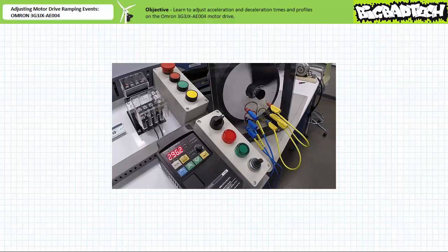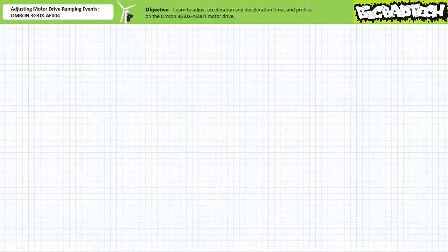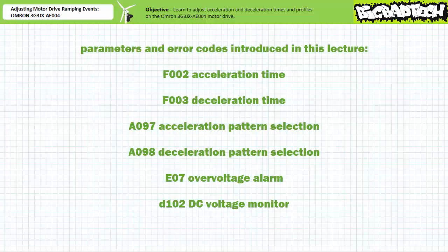Notably, the heavy flywheel decelerates to a speed I can stop with my finger in only 13 seconds, whereas previously I had enough established inertia to rotate for just shy of 6 minutes. 6 minutes of waiting just got reduced to 13 seconds. In conclusion, we learned to change acceleration and deceleration times and profiles on the Omron 3G3JX AE004 motor drive and observe their results. Additionally, we learned to recover the Omron 3G3JX AE004 motor drive from an over-voltage event during deceleration and increase deceleration time to accommodate loads with large rotational inertia.